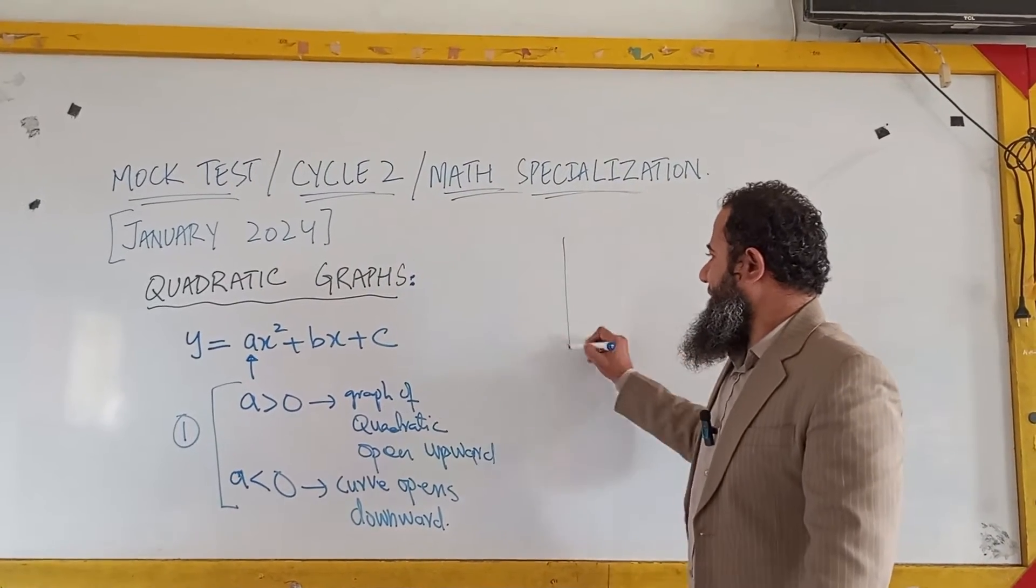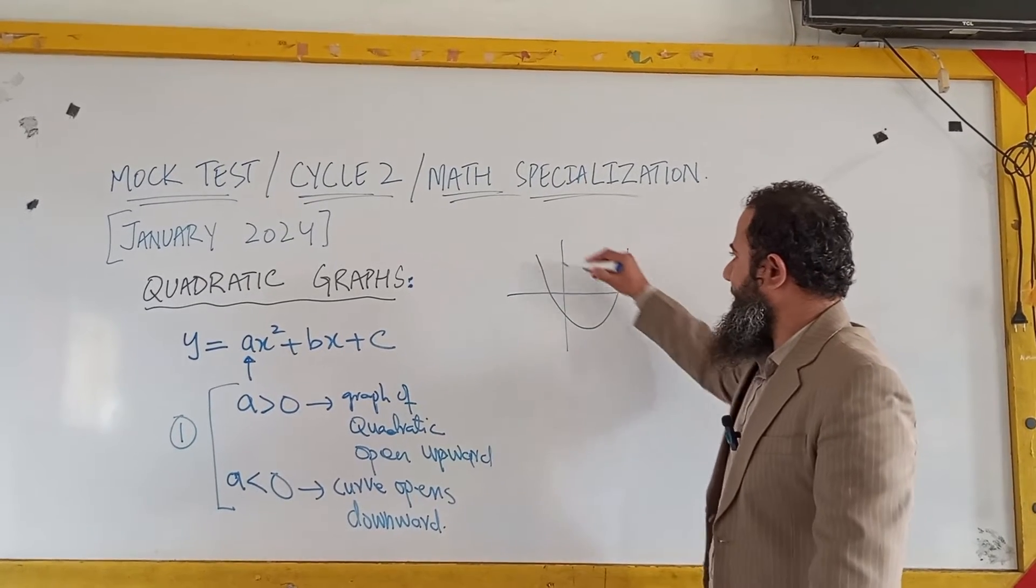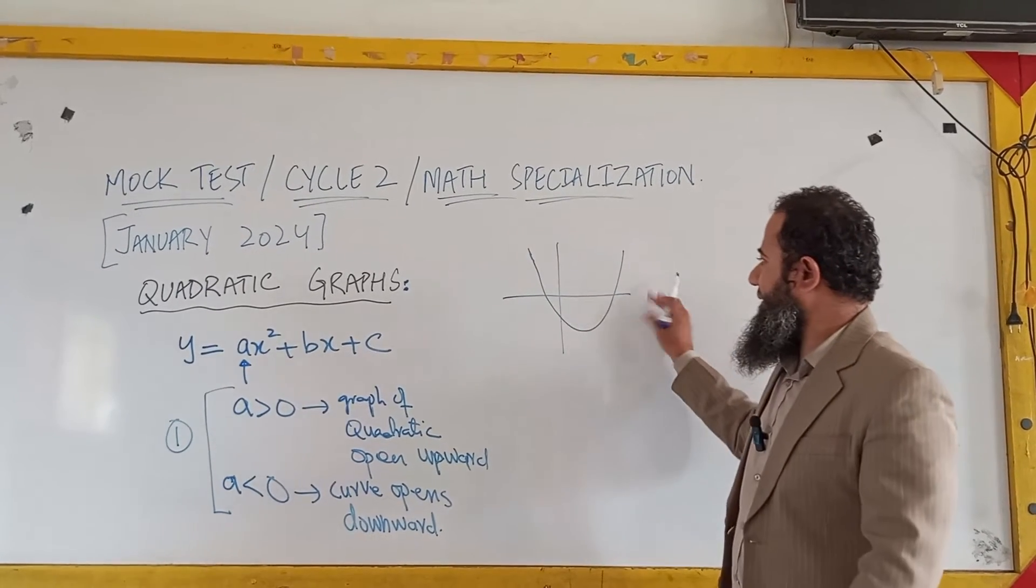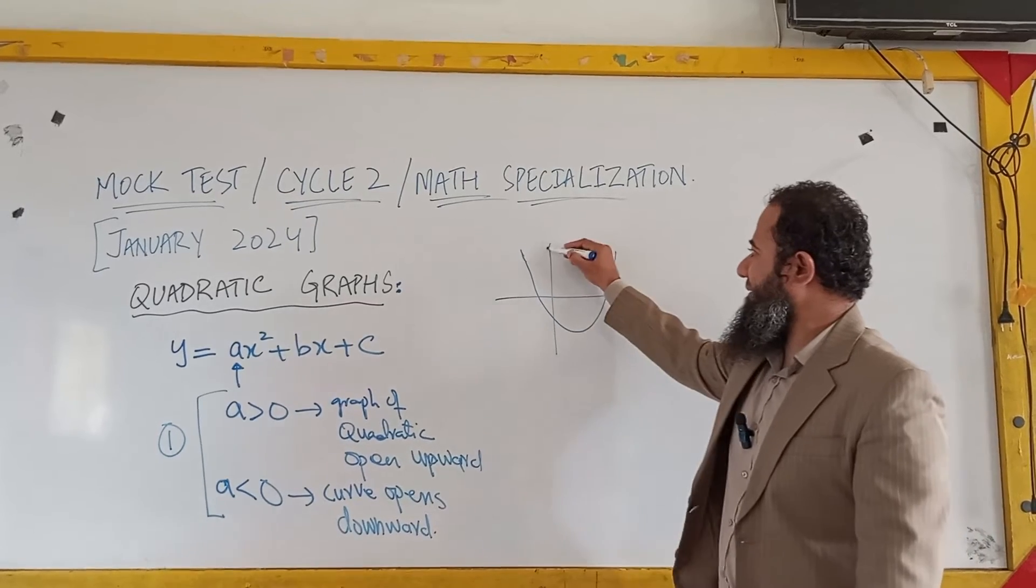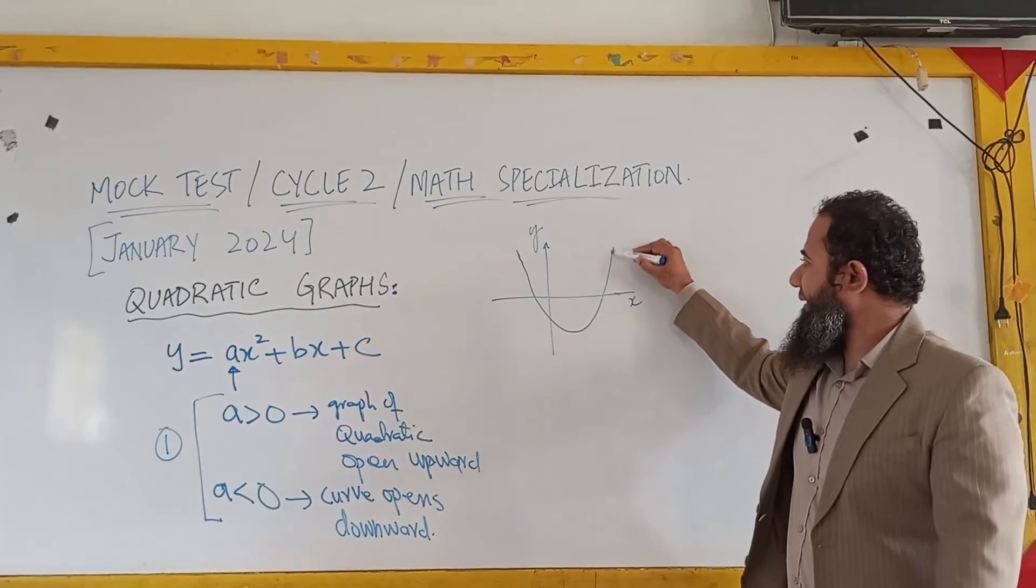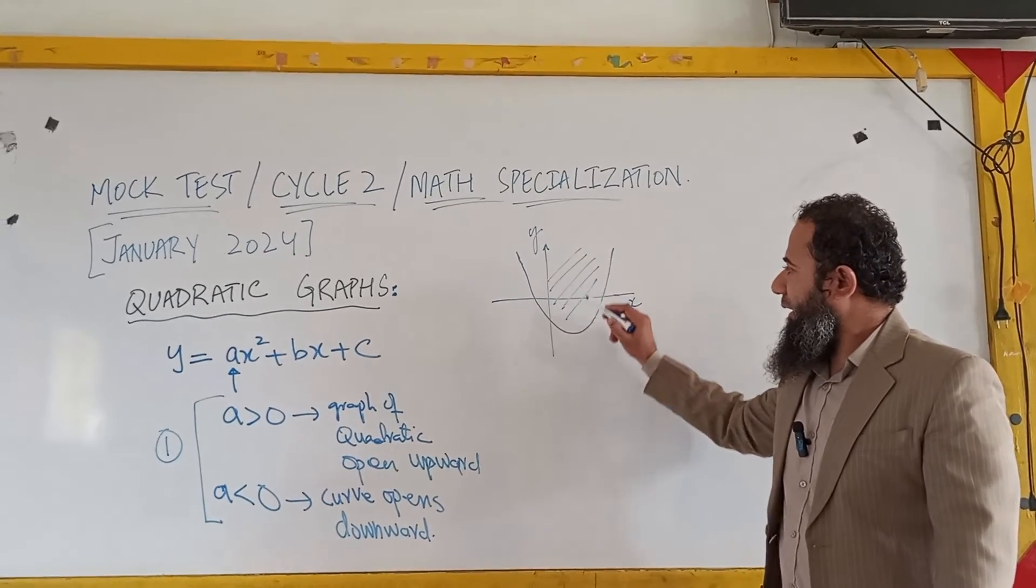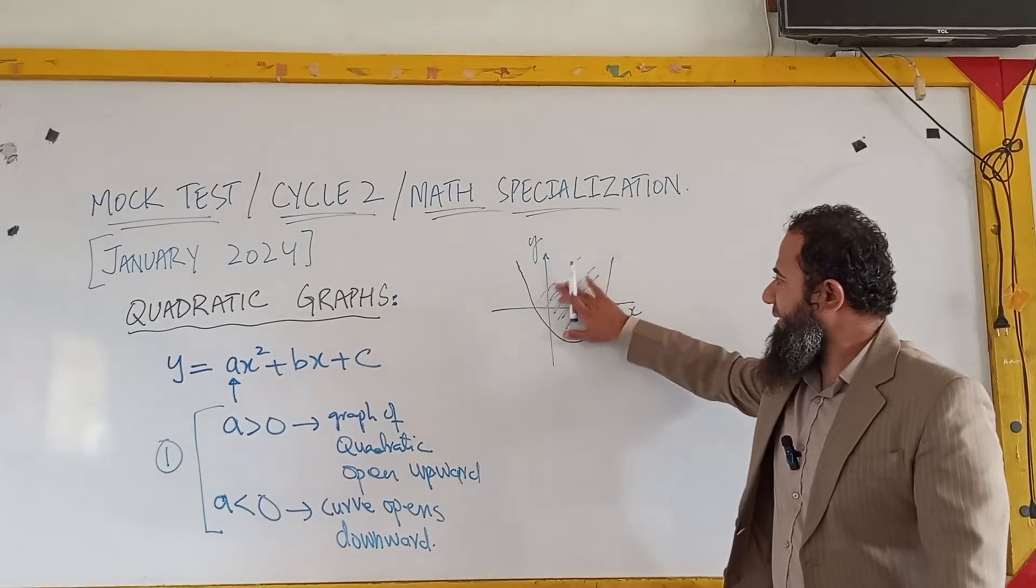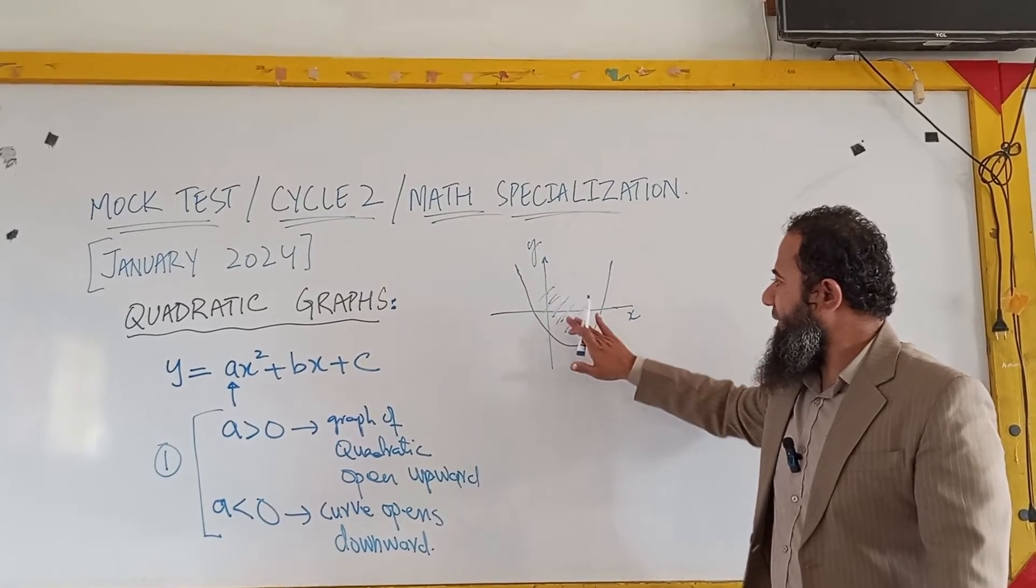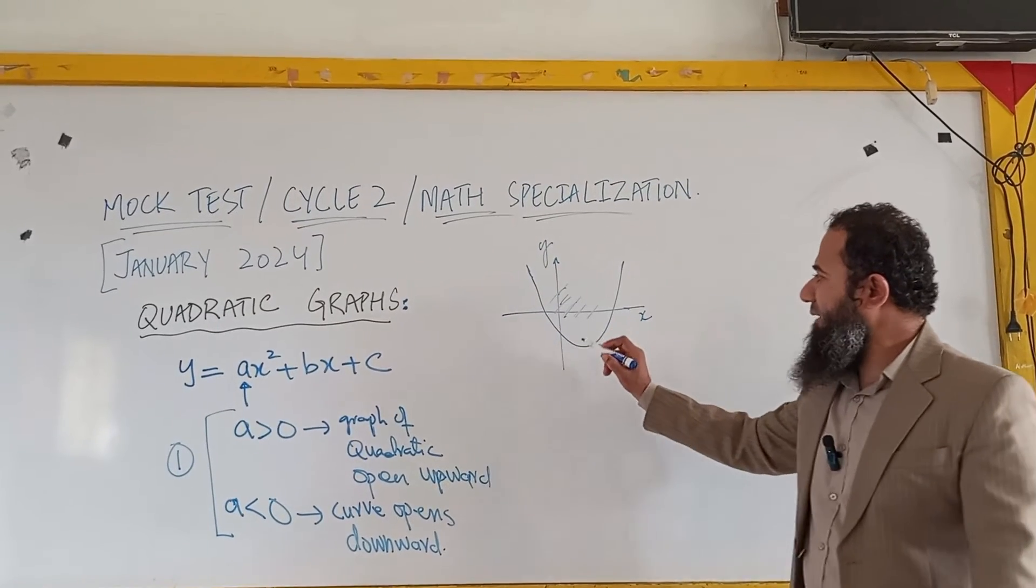For example, if a quadratic curve opens upward, you will have a trend like this. This is the x-axis and this is called the y-axis, and when the curve opens upward, this gives you the opening of the quadratic curve. It is open upward.